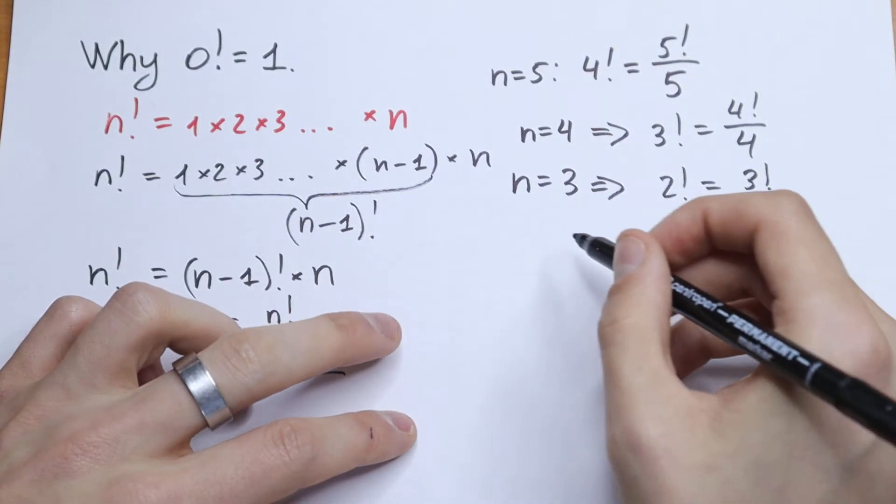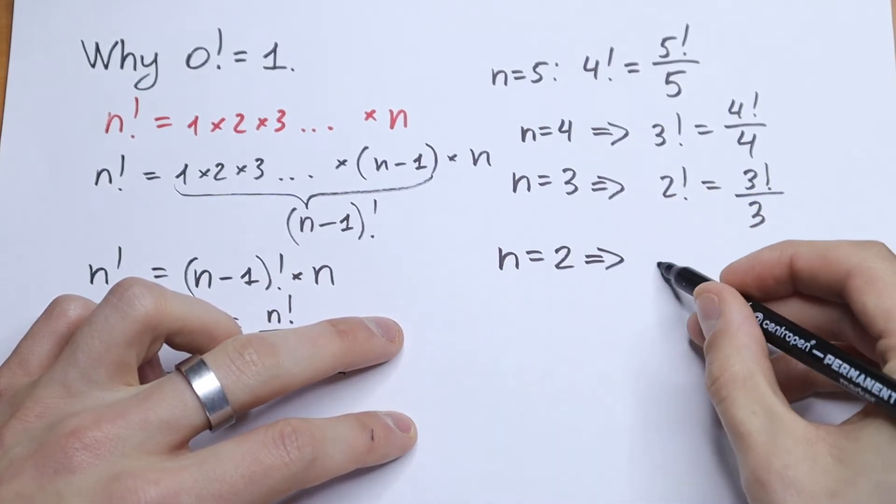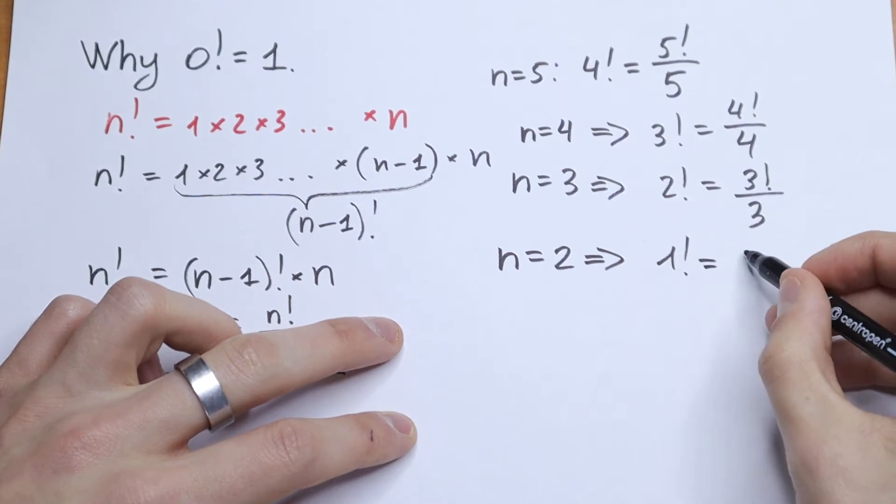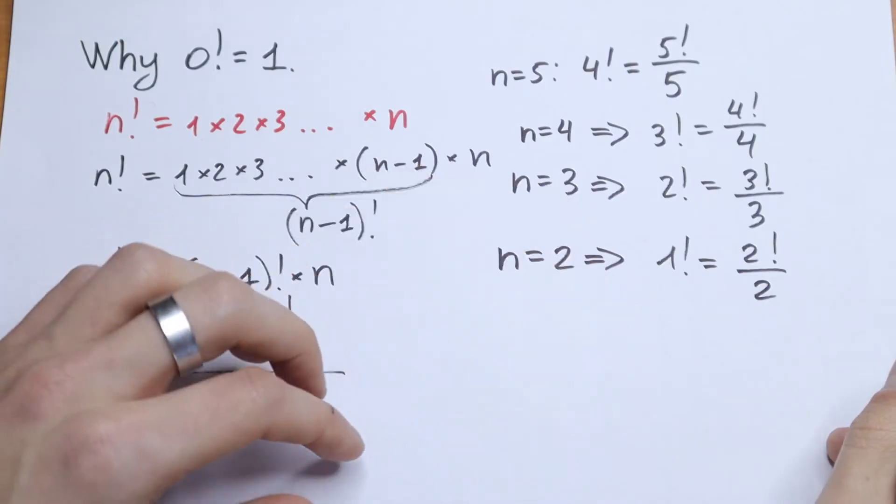We have to find two more steps. n equal to 2. We will have that 1 factorial equal to 2 factorial over 2. And the last one,